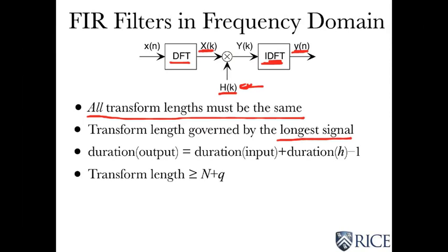Well, that means the longest signal is going to be the one. Well, by far and away, the one that's the longest is the output. And as we know, the duration of the output is the duration of the input plus the duration of the unit sample response minus one. And that means our transform length has to be bigger or equal to n plus q.